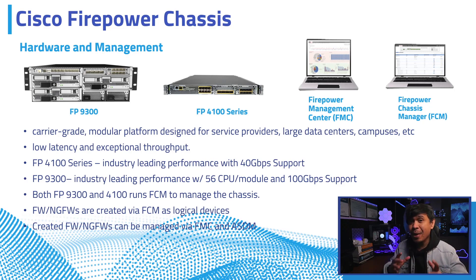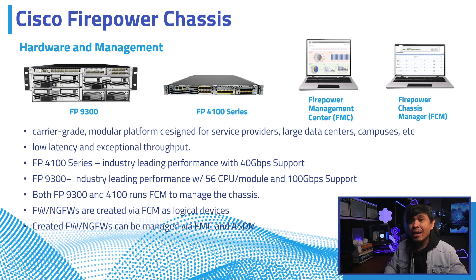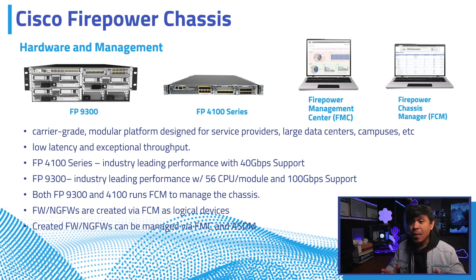The firewalls created from FCM can be managed via FMC or ASDM. Why ASDM? Because from FCM, we can use ASA OS or FTD image when creating firewalls. The Firepower Chassis models don't only have more capacity and higher specifications — they also have features not supported by other Firepower series and ASA hardware, such as active-active clustering, multi-instances, and many more.